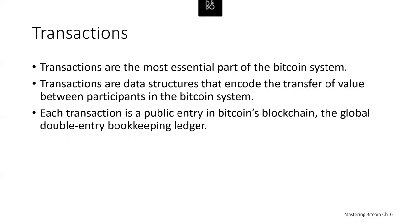Transactions are probably the most important part of the Bitcoin system. Everything else in Bitcoin is designed to ensure that transactions can be created, transmitted across the network, validated by Bitcoin nodes, and then added by miners into a block on the blockchain, which is our global ledger of transactions. A transaction is a data structure that describes the transfer of value between participants in the Bitcoin system.